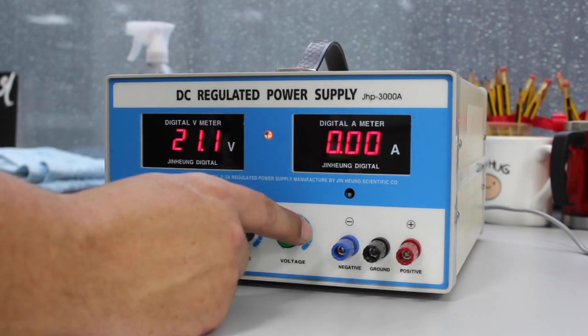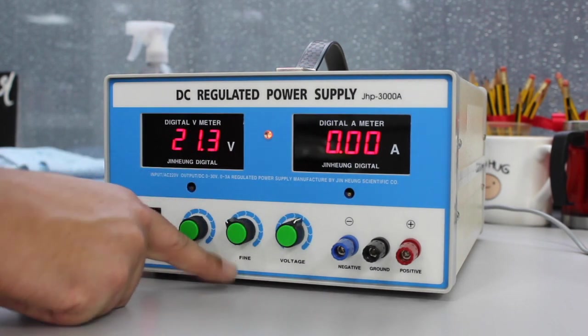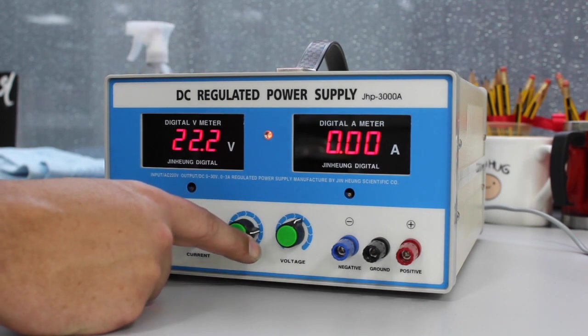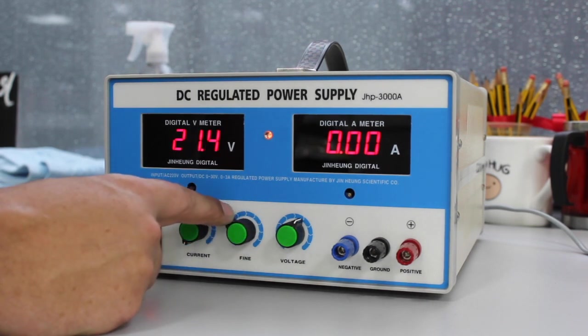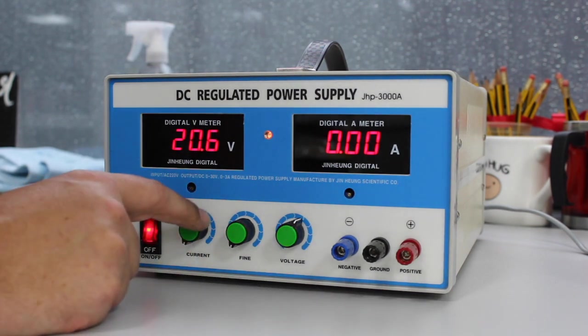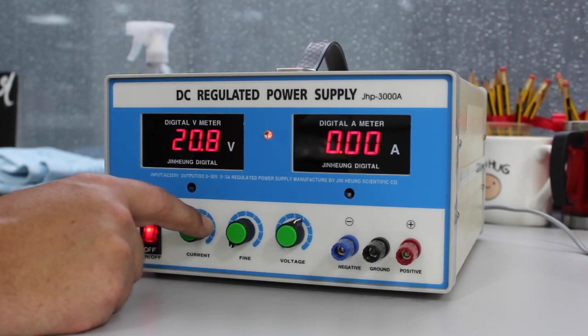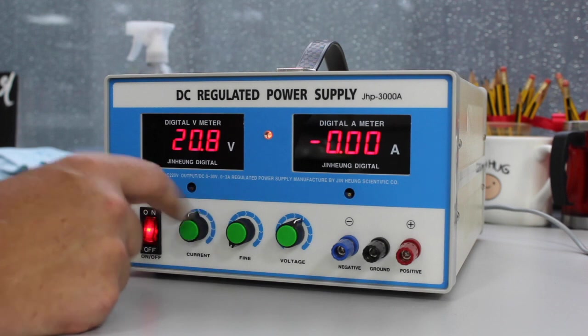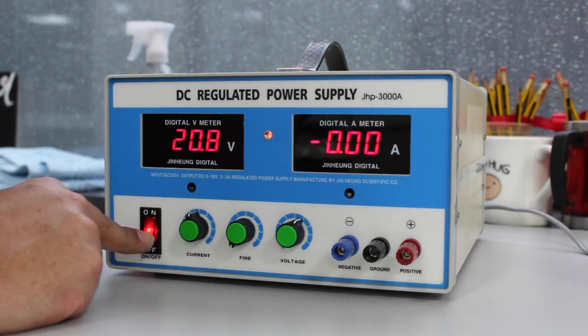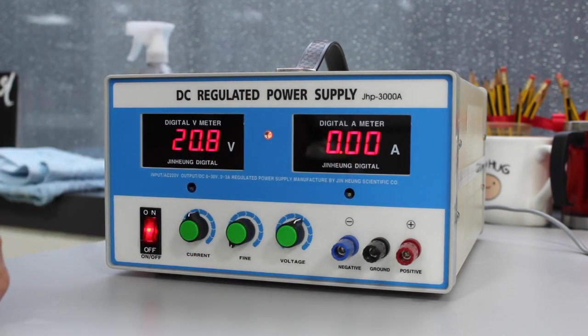We are going to set this to about 20 to start. We fine tune it with this one labeled fine. If you want to just change it a few tenths of a volt, that is the one you will turn. Here is your current. We are going to turn it up, notice nothing happens right now because there is no connection. I am going to set it about half way to start and I will be adjusting it as I need to get my 0.2 to 0.3 amps. That is what we want it set at.